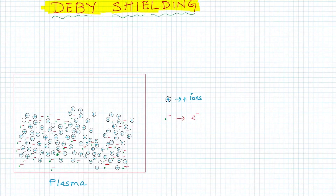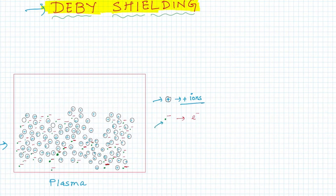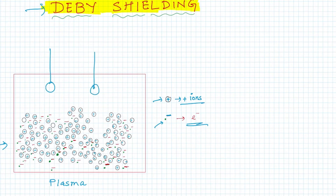In this video I am going to explain about Debye shielding. So what is Debye shielding? Suppose we have a plasma here — this is a plasma and it contains positive and negative charges. This symbol represents positive ions and the green negative represents negatively charged electrons. Now suppose we have to insert two metallic balls and connect these two with a battery.